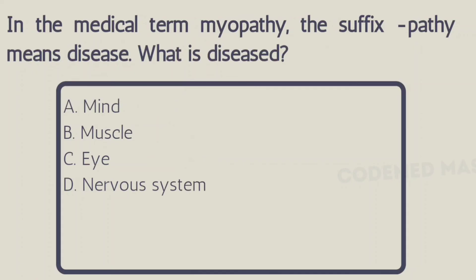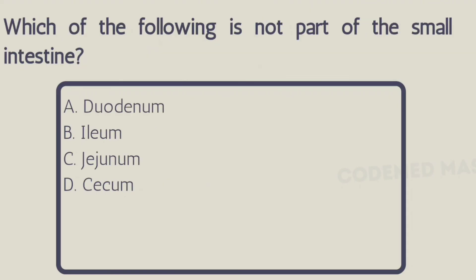Next question: in the medical term myopathy, the suffix '-pathy' means disease — so what is diseased? Option A: mind, Option B: muscle, Option C: eye, Option D: nervous system. The right answer is Option B, muscle, because 'myo' means muscle and '-pathy' means disease, so it is the disease of the muscle. Next question: which of the following is not a part of the small intestine? Option A: duodenum, Option B: ileum, Option C: jejunum, Option D: cecum. The right answer is Option D, cecum.